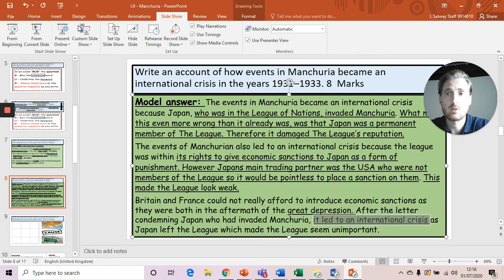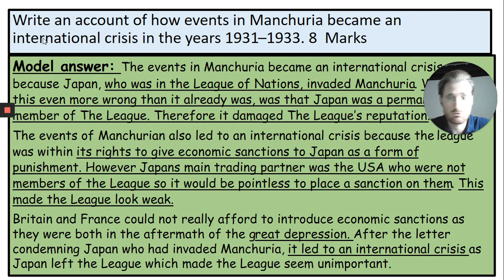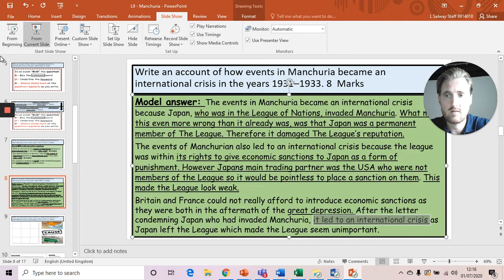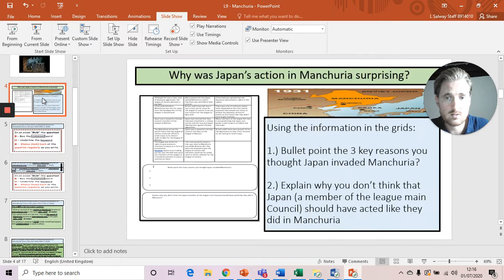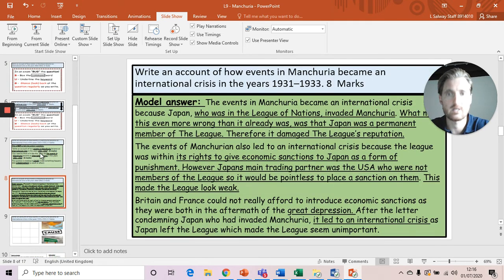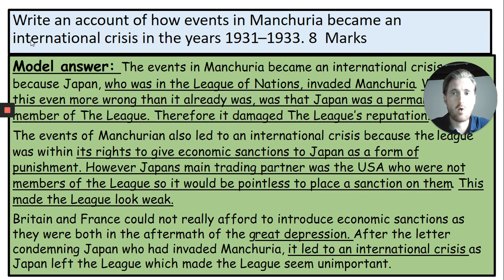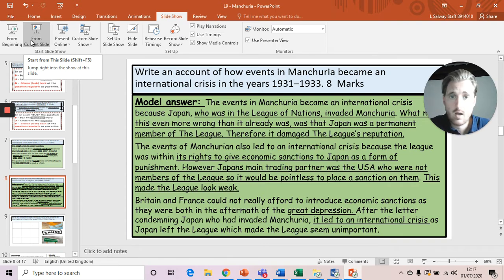So what I would like you to do now is have a go. I'm not asking you to write the full two paragraphs for eight marks, but I'd like you to pick one of the events. You can go back to the sheet you had originally with lots of the information on and choose one of your three bullet points as why you thought Japan invaded. Try and write it as I wrote it in my model answer — start off with 'The events in Manchuria led to an international crisis,' use the question to start your sentence, tell me why, and then explain how it became an international crisis. If you wish to write the whole exam question, feel free — we'll be really happy to mark it for you. When you're ready, please continue with the PowerPoint.